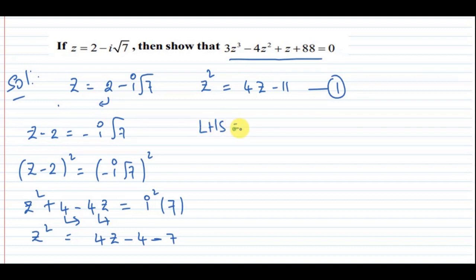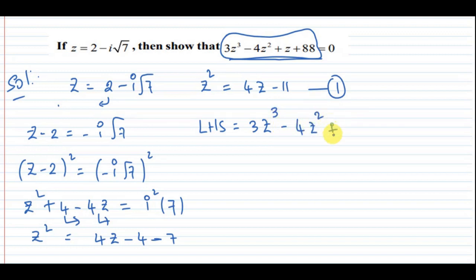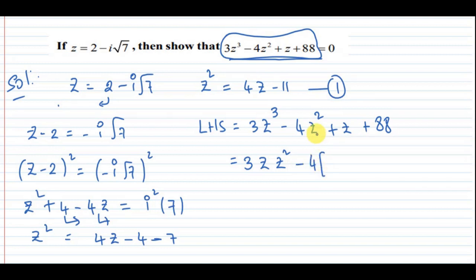Now we have the LHS part of the problem: 3Z cubed minus 4Z squared plus Z plus 88. We look at equation 1, where Z squared equals 4Z minus 11, and we substitute Z squared wherever it appears.